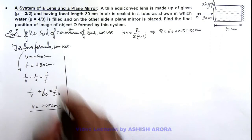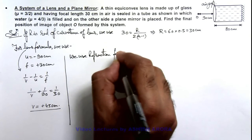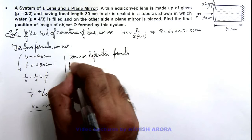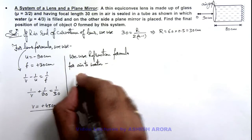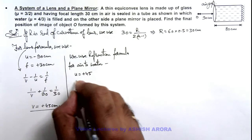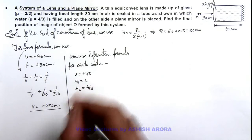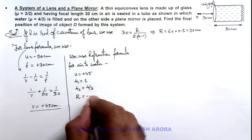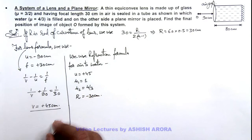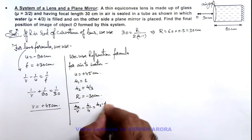Then we use the refraction formula for air to water. As light ray goes from air to water, we take u = +45 cm, μ₁ = 1 (refractive index of air), μ₂ = 4/3 (refractive index of water). The radius of curvature we already calculated as 30 centimeter, but since it is on the left side, we take it as −30 centimeter. Substituting into the refraction formula: μ₂/v − μ₁/u = (μ₂ − μ₁)/R.